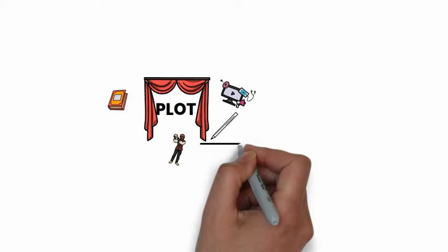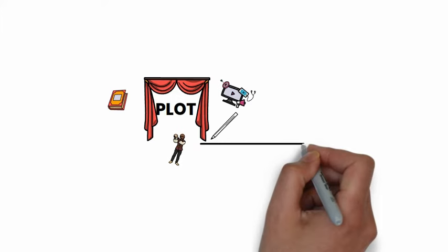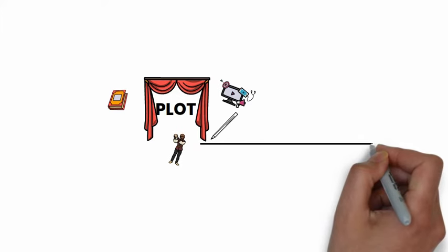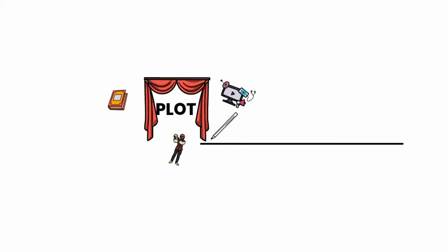Some of these plots are linear, beginning with an exposition, following chronological order of events, and ending with a resolution.